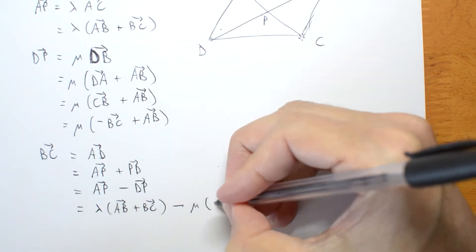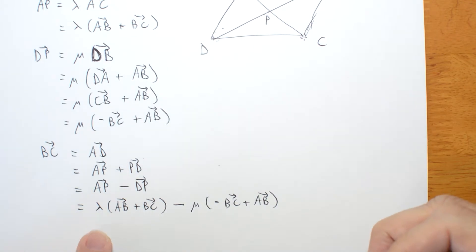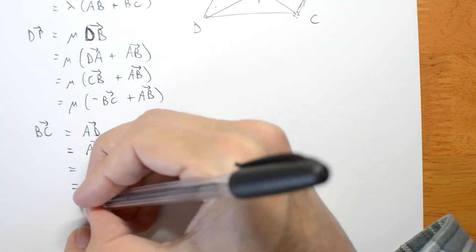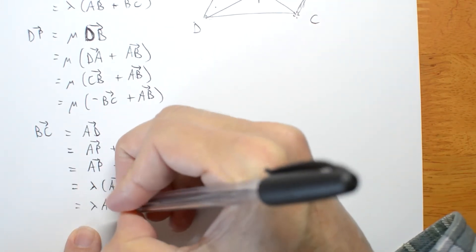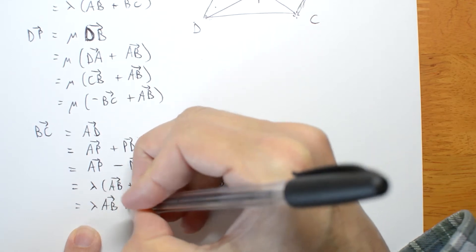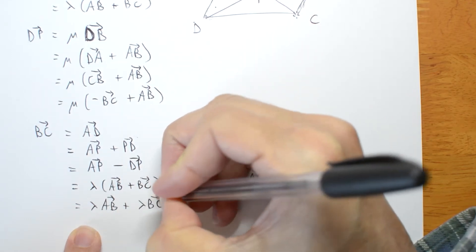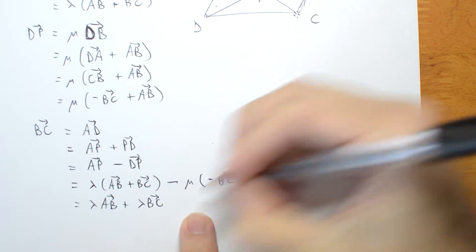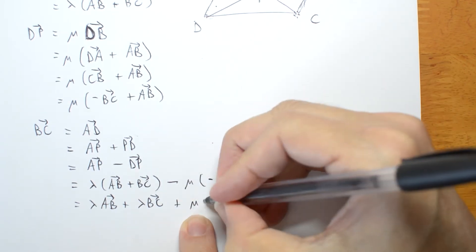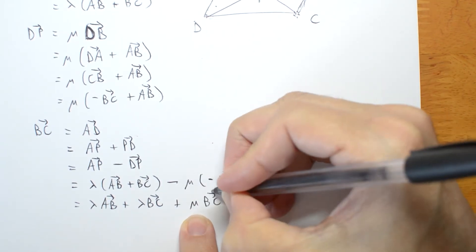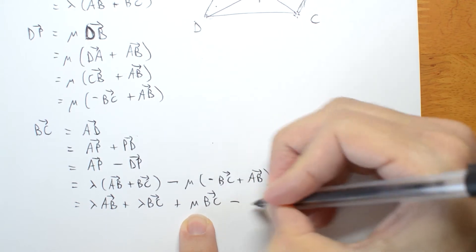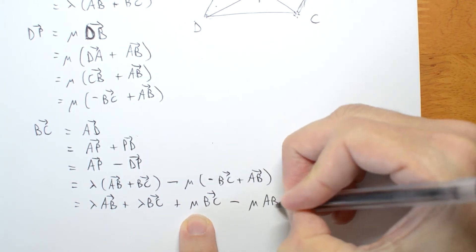And then minus DP is mu minus BC plus AB. Now I just have to be very careful with negatives and with lambdas and mu's. Expand the brackets, lambda AB plus lambda BC plus mu BC, two negatives, minus mu AB.